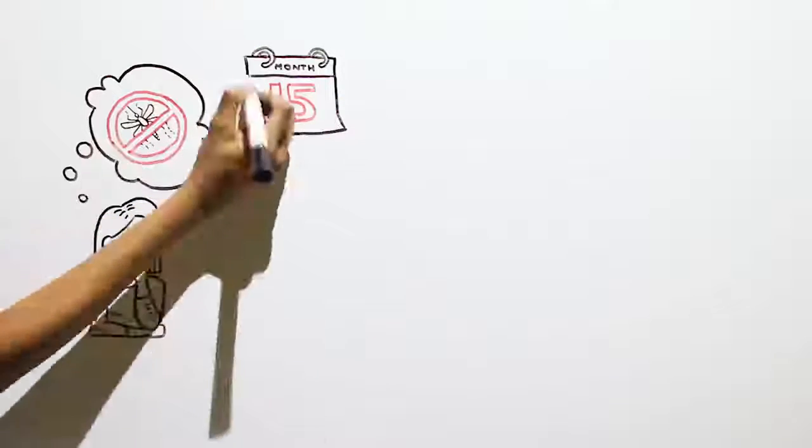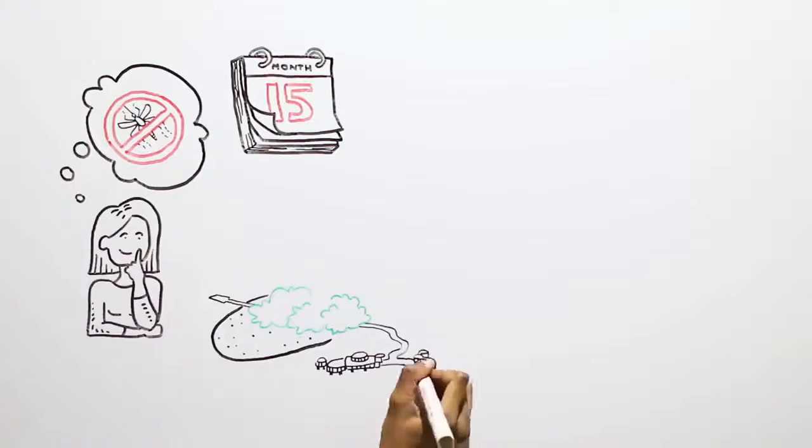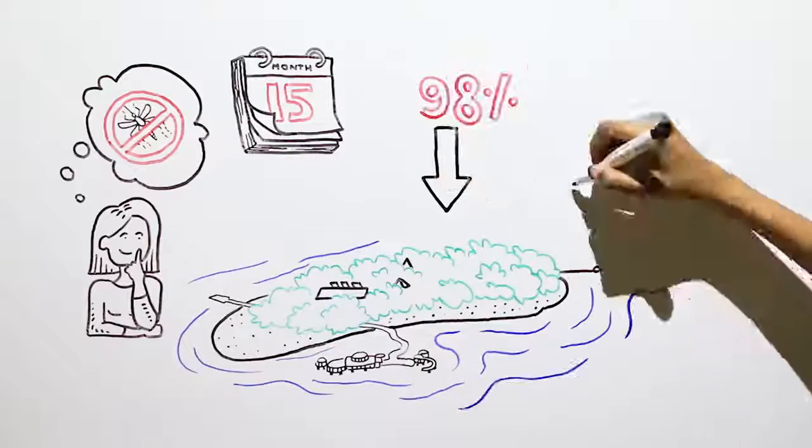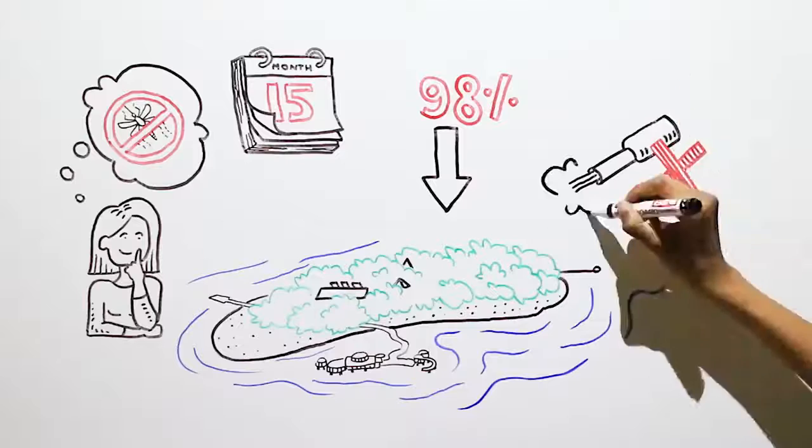In the past 15 months, the mosquito population at Soneva Fushi in the Baa Atoll has collapsed by 98%. Over the same period, we stopped all chemical fogging.